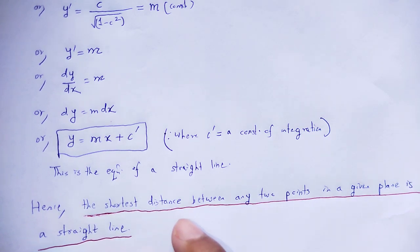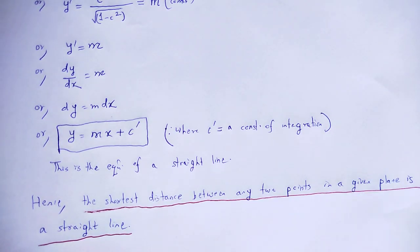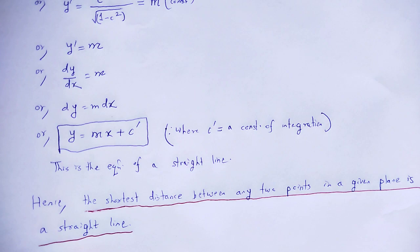The shortest distance between any two points in a given plane is a straight line. With these useful and informative notes, let me wind up the session. Thank you.